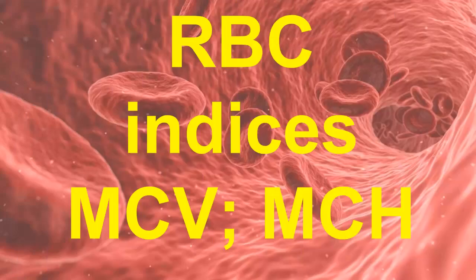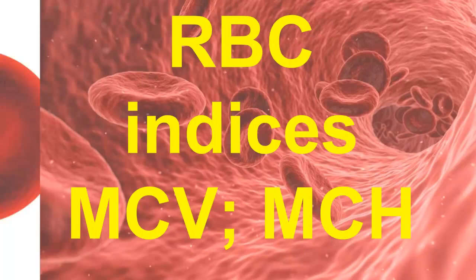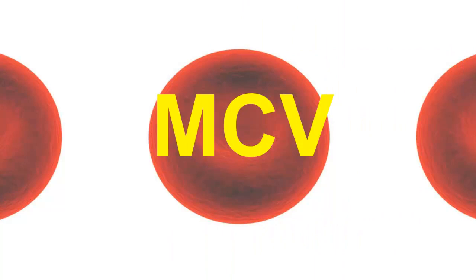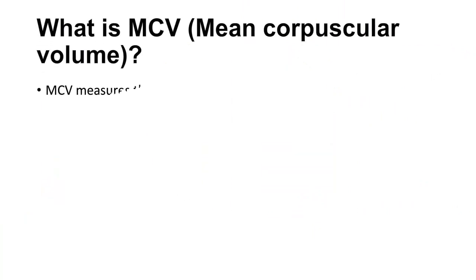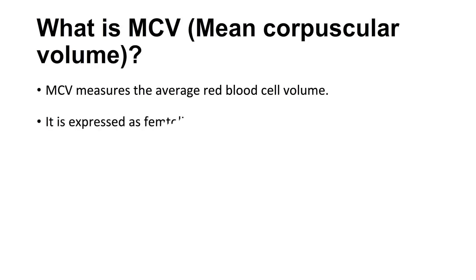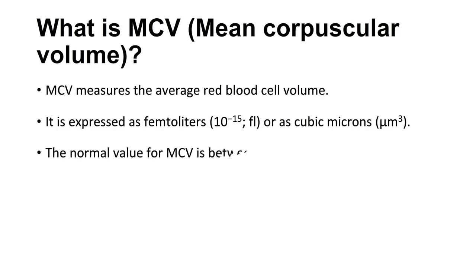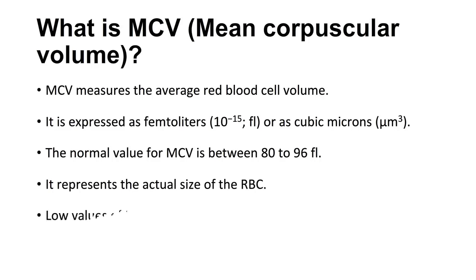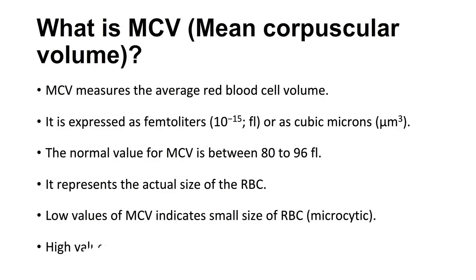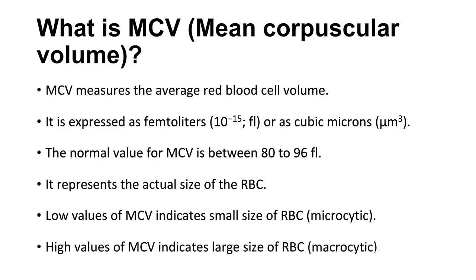Red blood cell indices: MCV and MCH. MCV stands for Mean Corpuscular Volume. It measures the average red blood cell volume, expressed in femtoliters or cubic microns. The normal value for MCV is between 80 to 96 femtoliters. It represents the actual size of the RBC. Low values of MCV indicate small RBCs, that is microcytic RBCs, while high values indicate large RBCs, that is macrocytic RBCs.